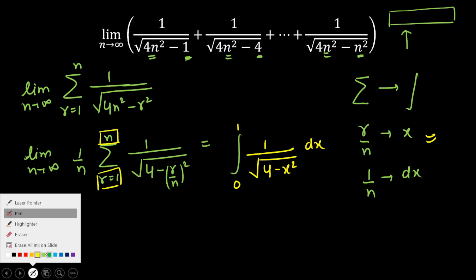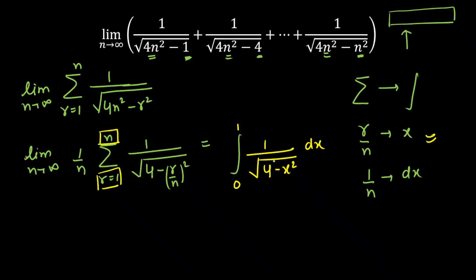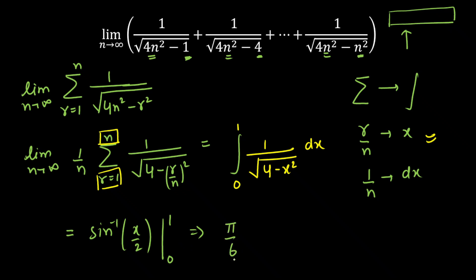This is a very common form — it is nothing but sine inverse of x/2, with lower limit 0 and upper limit 1. When you put the upper limit, you get sine inverse of 1/2, which is π/6. And sine inverse of 0 is 0. So π/6 is our final answer.